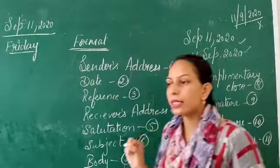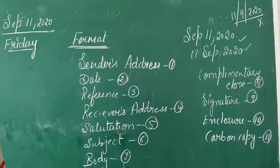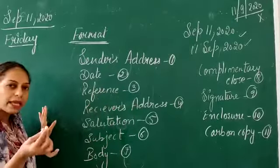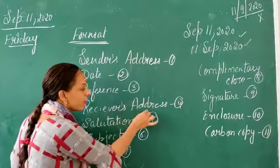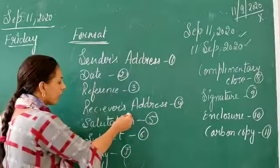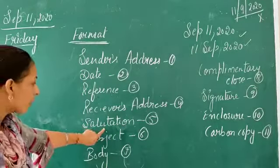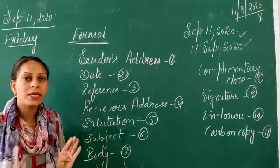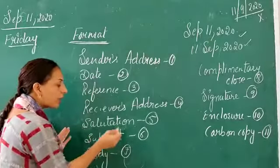The third point is the reference. You include it sometimes, and sometimes you don't. Reference means the order number or reference number for whatever you are placing an order for. Next is the receiver's address — the address of the person who will receive the letter. Then comes salutation, which means showing respect, such as writing 'Dear Sir' or 'Respected Sir'. After that is the subject — what is the topic or matter you are writing the letter about.